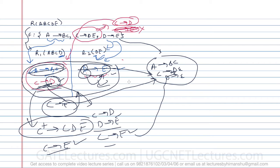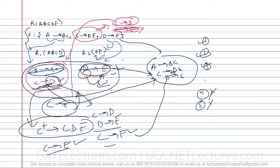Now we'll move on to the next part, which is normalization. Normalization is a process of dividing tables into a smaller number of tables so that we can have minimum redundancies. We'll see how to determine if a relation is unnormalized, 1NF, 2NF, 3NF, 4NF, BCNF, or 5NF. For GATE and UGC NET, they only ask questions on 1NF, 2NF, and 3NF, though we'll cover BCNF with a small introduction.